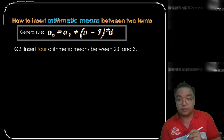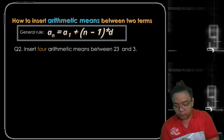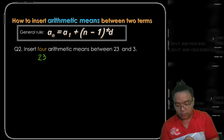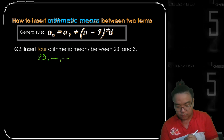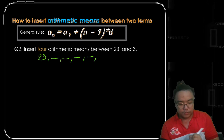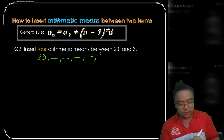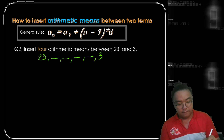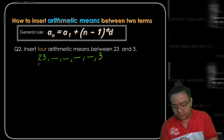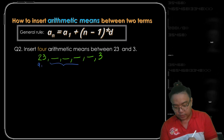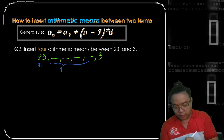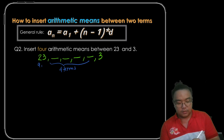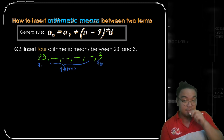Looking at the given, we have 23 as our first term and we have to insert 1, 2, 3, 4 terms in between 23 and 3. This is a sub 1, and since we insert 4 terms, 3 is our a sub 6.